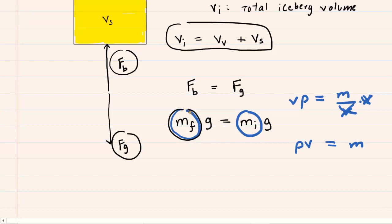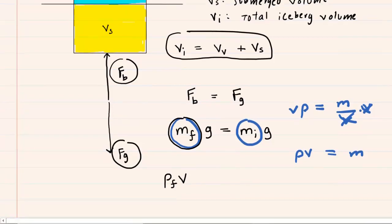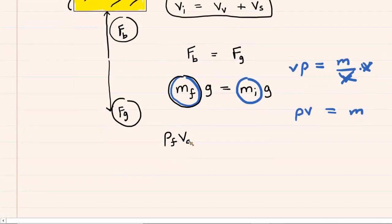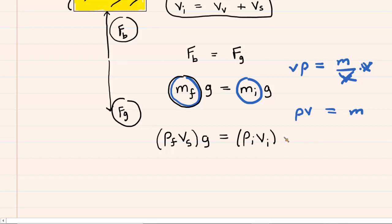The mass of the displaced fluid equals the density of the fluid multiplied by the volume of the displaced fluid. Looking back at the picture, the volume of displaced fluid equals the volume of the submerged portion of the iceberg, V sub S. On the other side of the equation, the mass of the iceberg is the density of the iceberg multiplied by the entire volume of the iceberg V sub I, each term multiplied by G.